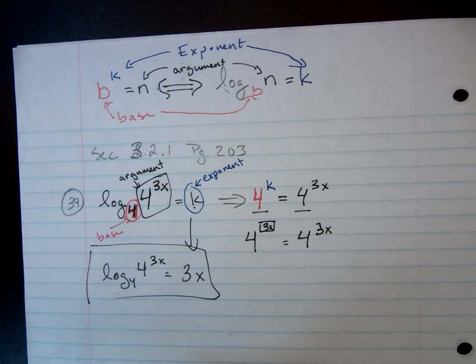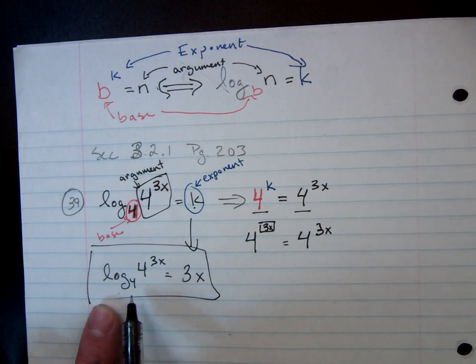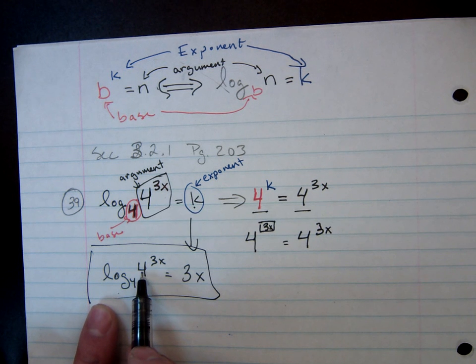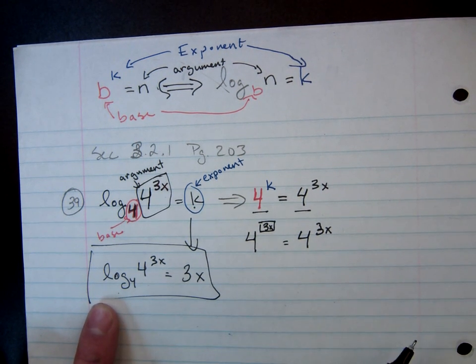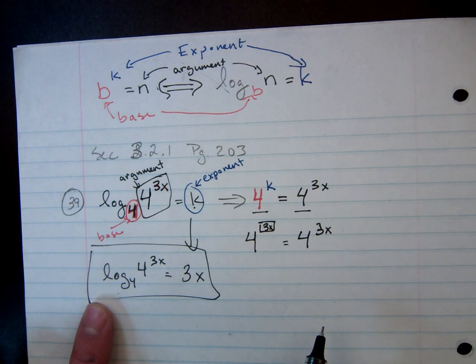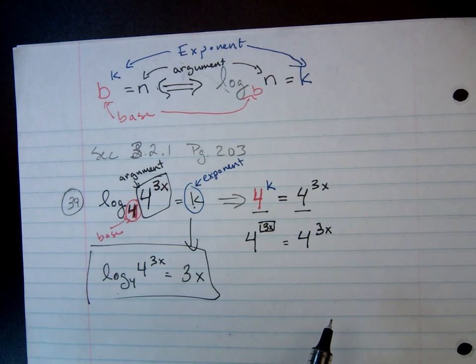This also ties into the fact that these are inverses. So if we have log base 4 and then another base 4 of an exponent, then it will more or less cause a cancellation. So log base 4 of 4 to the 3x is equal to 3x.